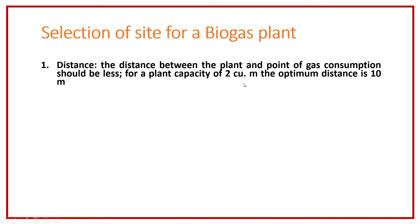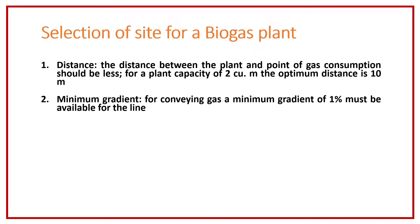The next point is there should be a minimum gradient for conveying the biogas from the plant to the point of use, and the minimum gradient requirement is almost 1 percentage, so that the gas can flow easily from the plant to the kitchen.